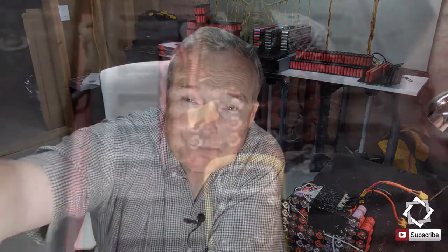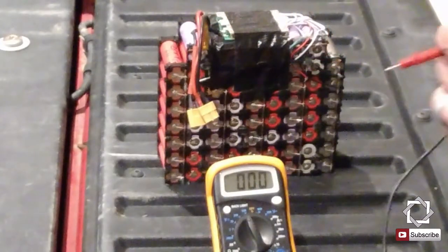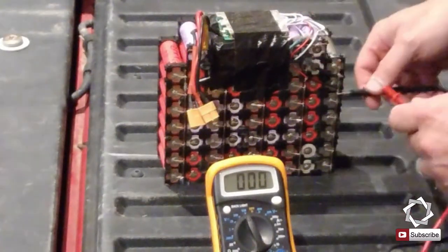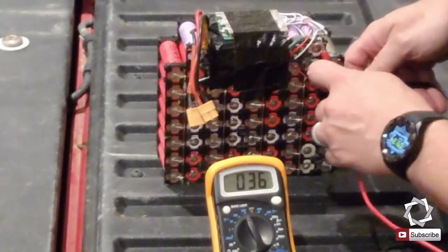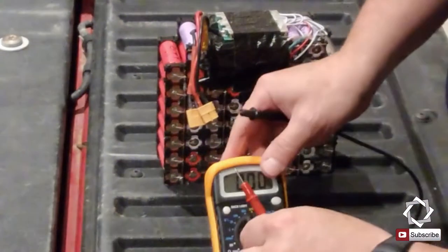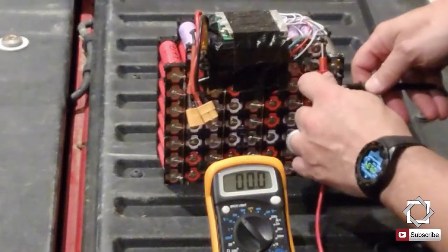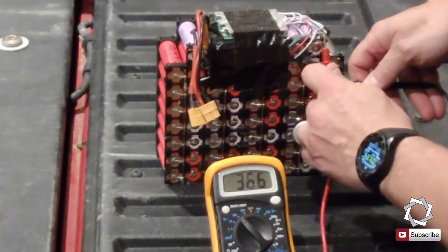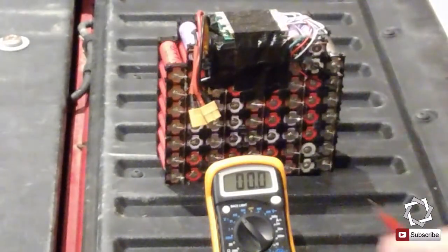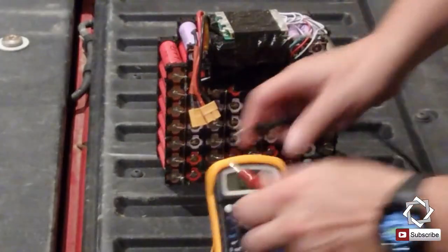I just finished mowing and this is the new BMS. Right now I'm at 36 volts. Yeah, 36.6, so that's not too bad - 36.6 after a full mow.